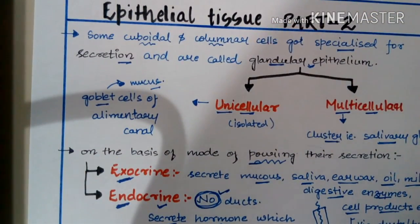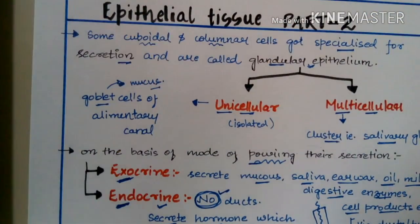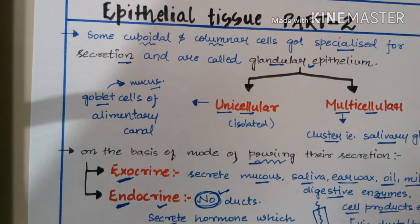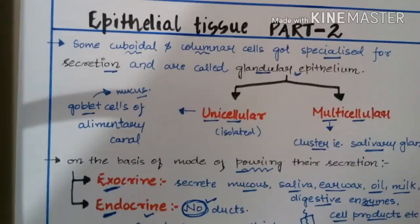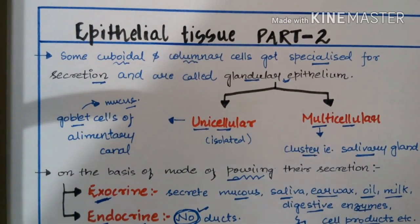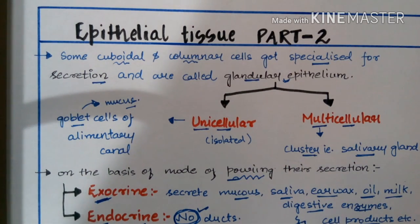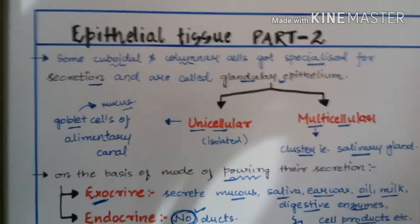So this concludes epithelial tissue part 2, in which we discussed the remaining part of simple epithelium, all portions of compound epithelium, and different kinds of junctions — tight, adhering, and gap. I hope this video helps you in your examination. Thank you so much for watching. If you liked this video, hit the like button, and if you are new, please subscribe.